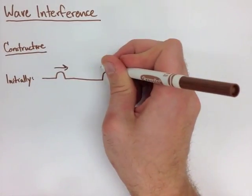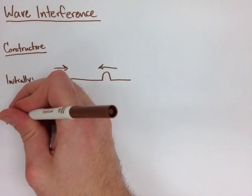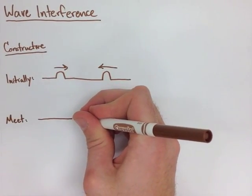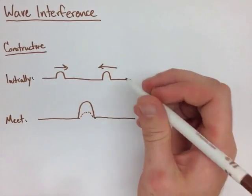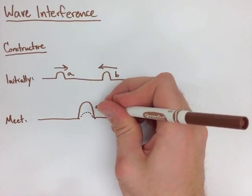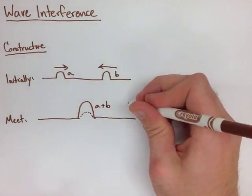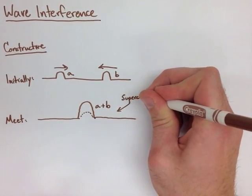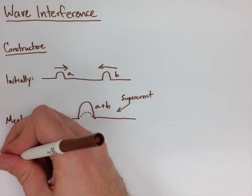So first we have two waves that are traveling towards each other. They're going to meet kind of in the middle, and they're going to make what's called a supercrest. We have waves A and B. When they meet, it's A plus B, making our supercrest.